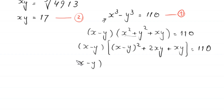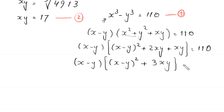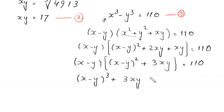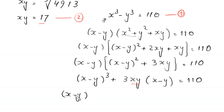We rewrite x² + y² as (x − y)² + 2xy, so the expression becomes (x − y)[(x − y)² + 2xy + xy] = (x − y)[(x − y)² + 3xy] = 110. Substituting xy = 17 from Equation 2: (x − y)[(x − y)² + 51] = 110.